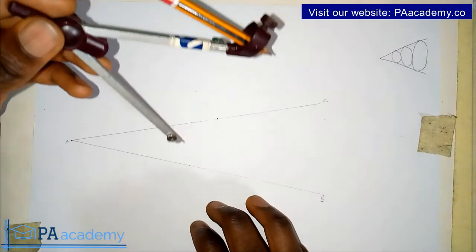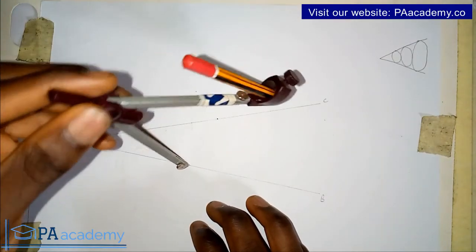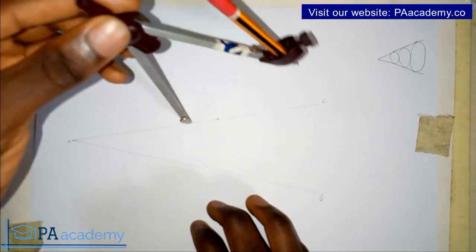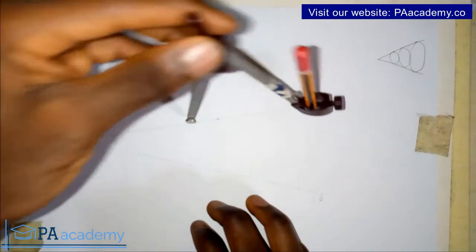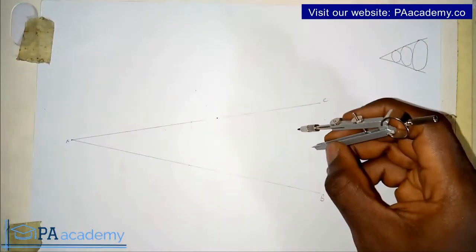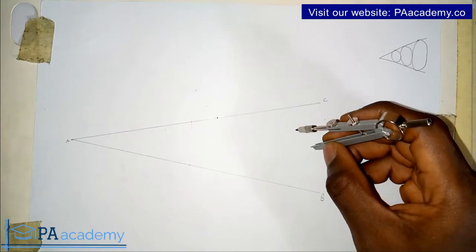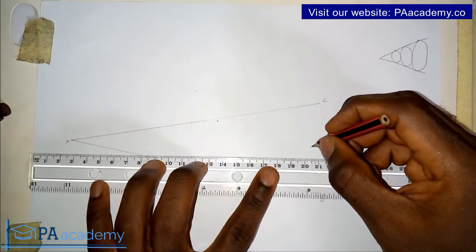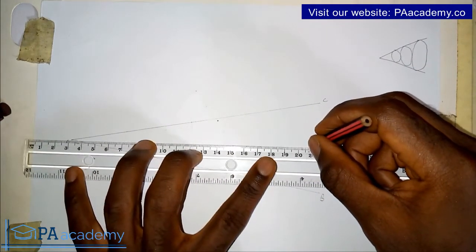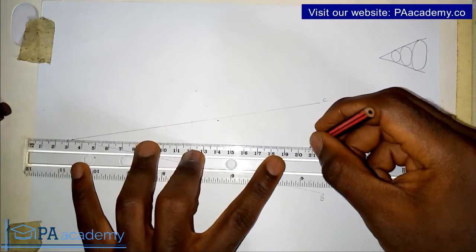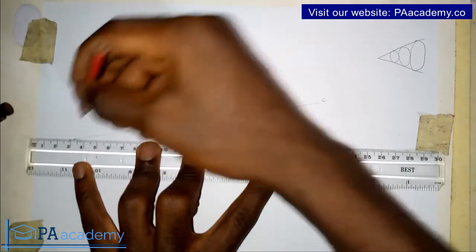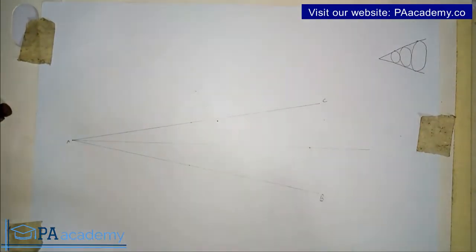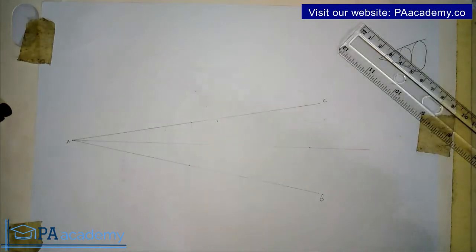I've done a separate video showing how to bisect an angle, so you can check that on the technical drawing playlist. Using the same compass length, from the points of intersection I'll draw arcs, and then draw a line from that intersection back to point A. We've now bisected the angle.